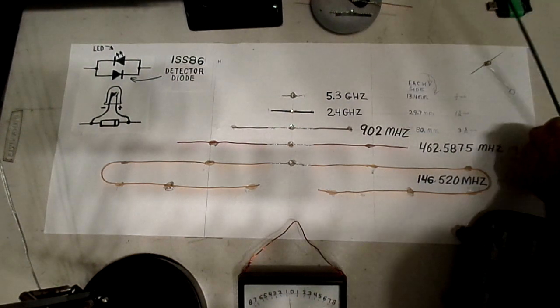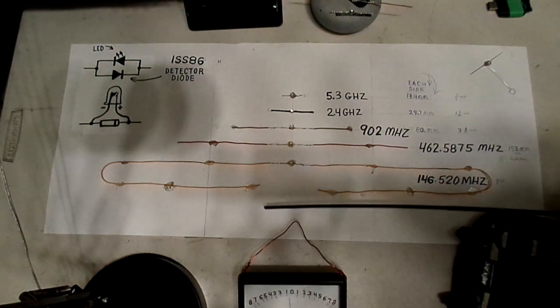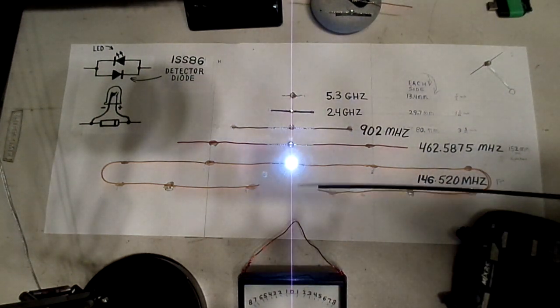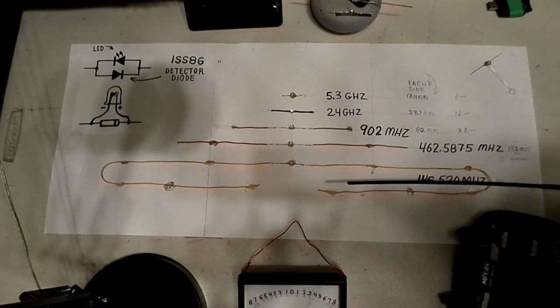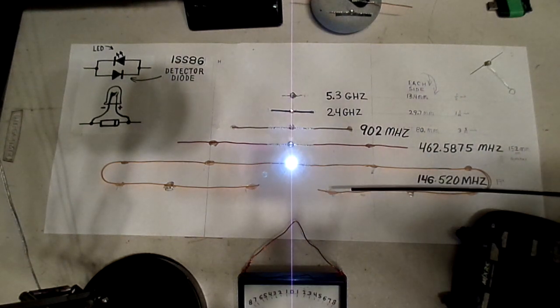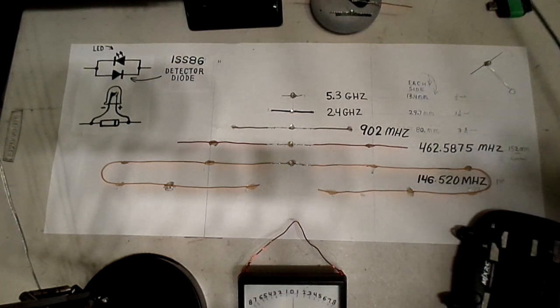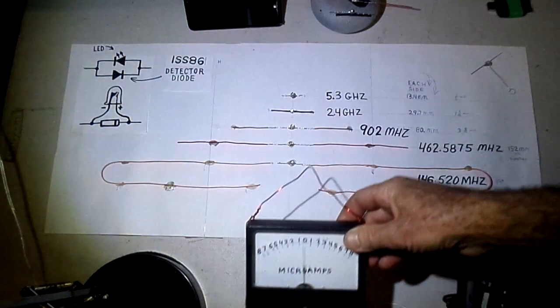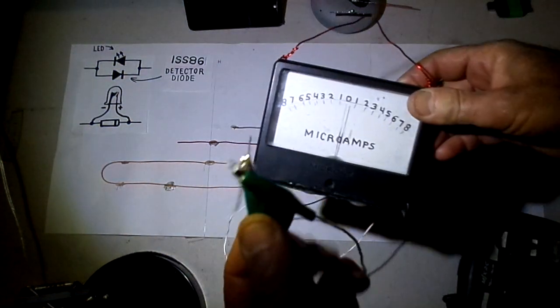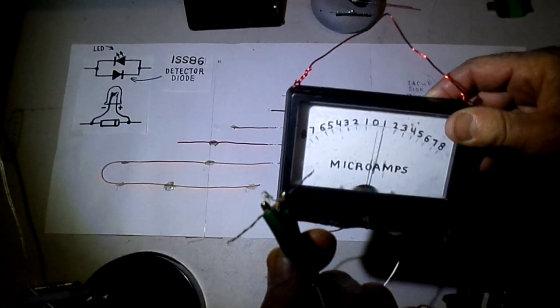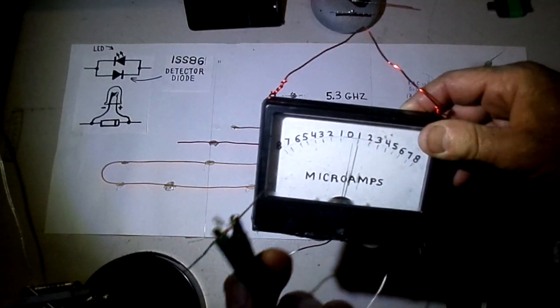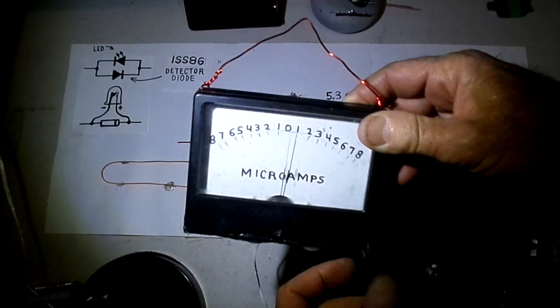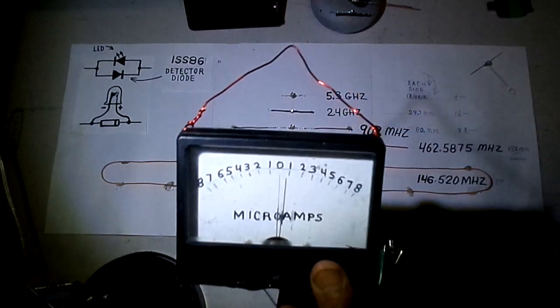Or I can take my 2 meter walkie-talkie here and I can transmit this one as well. That one really lights up the light. The other thing I noticed is that the meter I hooked one of these things to. I took a couple alligator clips and I clipped across one of these LED diode configurations. And I noticed it made an awesome field strength meter.